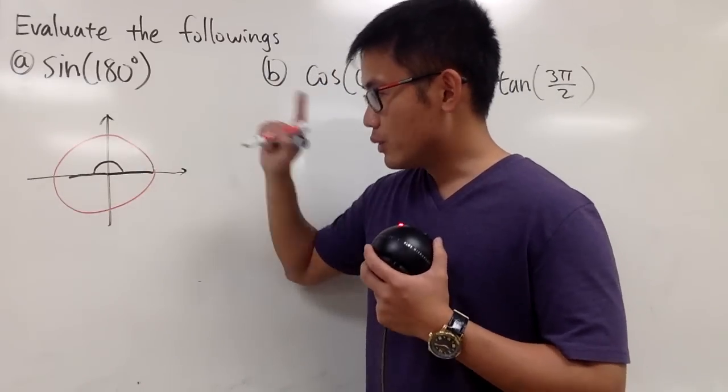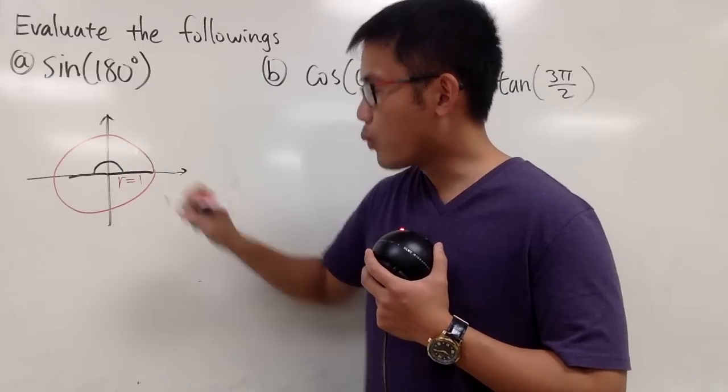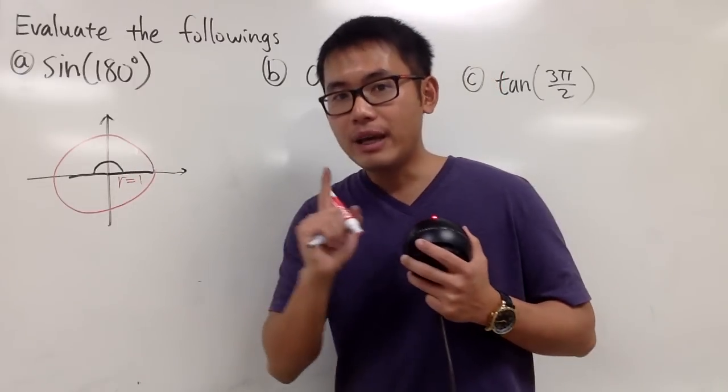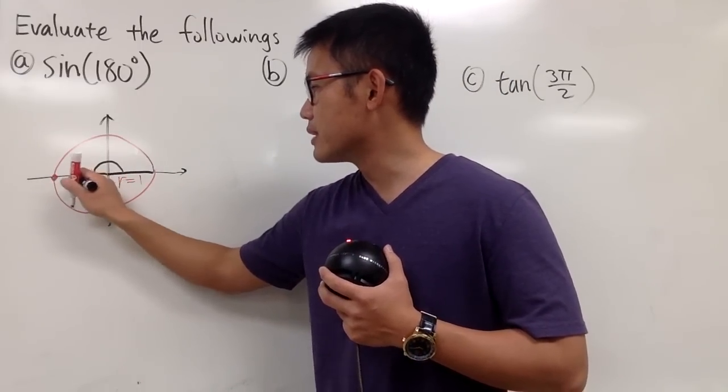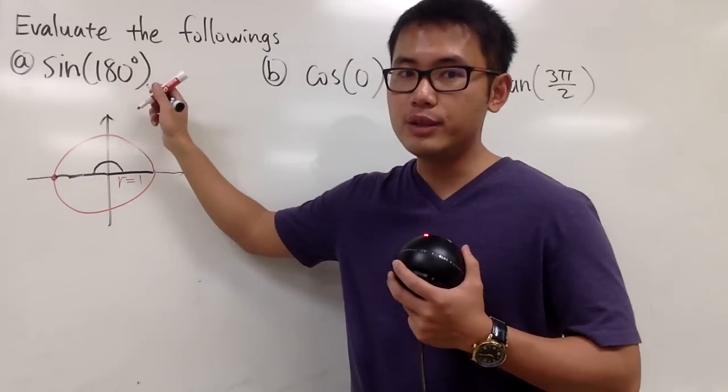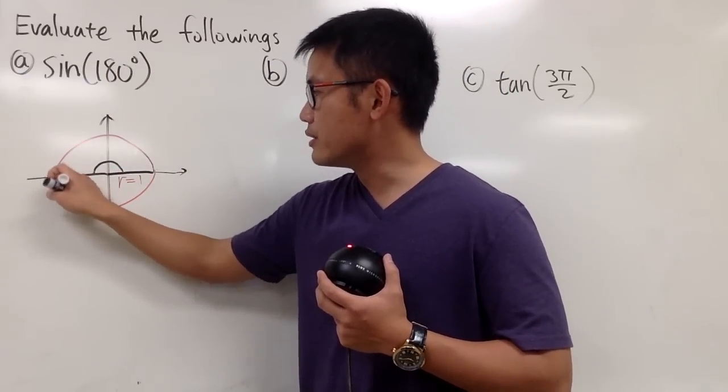This is a unit circle, so that means r is equal to 1. And our focus is this point right here, because we are talking about 180 degrees. That's the terminal side, and that intercepts with the unit circle right here.